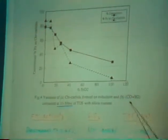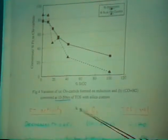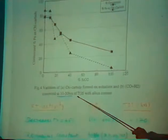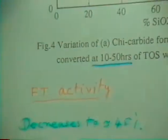Here we have plotted the chi-carbide content as a function of SiO2 content. You see it shows a linear decrease. In the same plot, we also plotted the conversion, H2 plus CO converted at 50 hours of time on stream versus SiO2 content. Both show a somewhat similar trend—they decrease with SiO2 content.